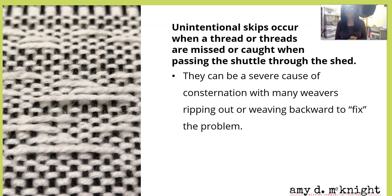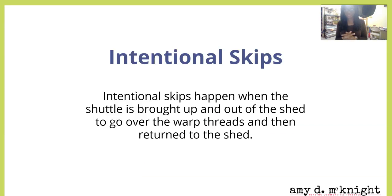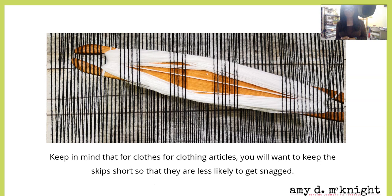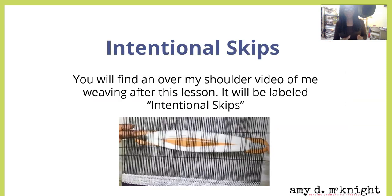They can be a severe cause of consternation with many weavers ripping out or weaving backwards to fix the problem. Intentional skips happen when the shuttle is brought up and out of the shed to go over the warp threads and then return to the shed. You can make the skips as long or as short as you'd like. Keep in mind that for clothing and things you want to use a lot, you want to keep those skips short so they're less likely to get snagged. You'll find a video of me weaving these after this video, labeled "Intentional Skips."